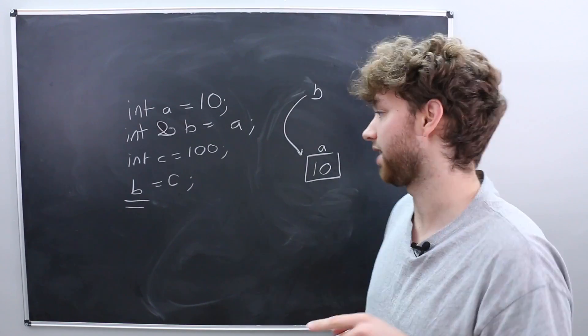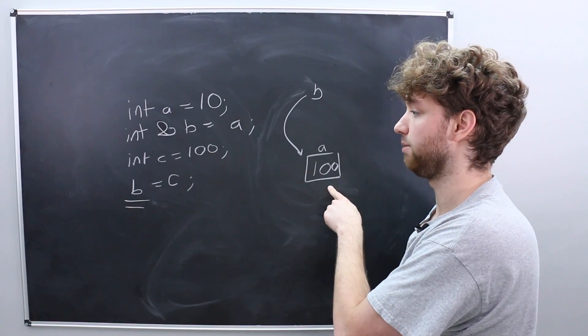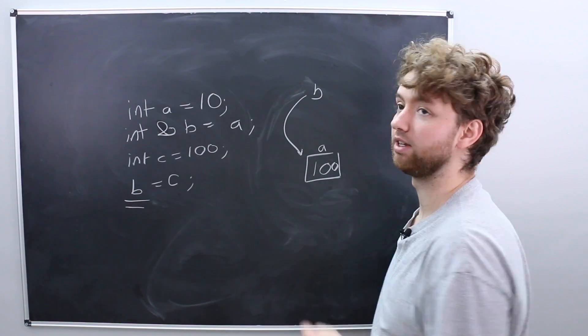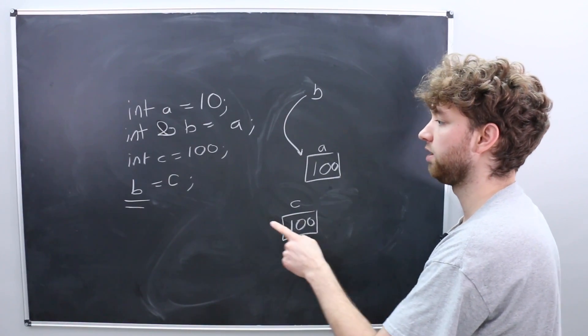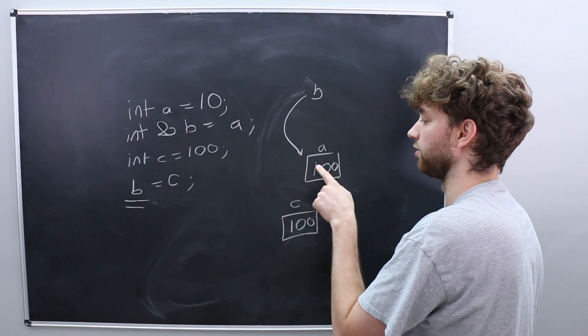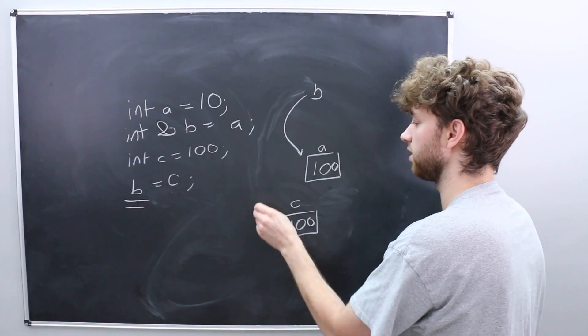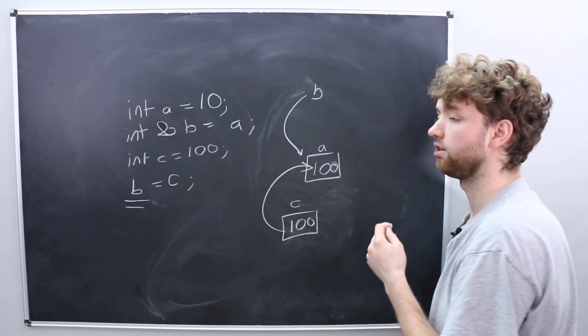Syntactically it appears as though we might be changing the reference b to now point to c but that's actually not what's happening because if you remember any time we use b it's talking about this location of memory. So what's actually happening is it's changing this location of memory to whatever value c is. So it might look something like this. c is 100 when we take c and assign it to b, b refers here so the value 100 is copied over to a changing it from 10 to 100.